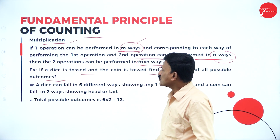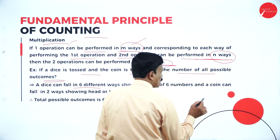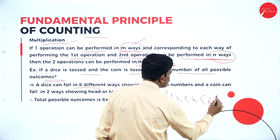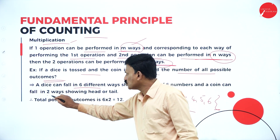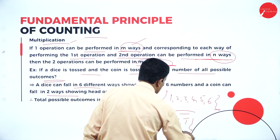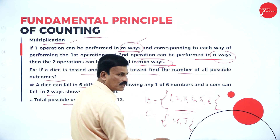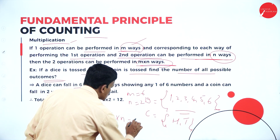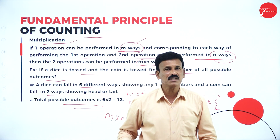A die can fall in six different ways, showing numbers 1 to 6. A coin can fall in two ways: head or tail. So M is equal to 6 and N is equal to 2. The total possible outcomes by the fundamental principle of multiplication is M into N, that is 6 into 2, equal to 12 ways. This is called the fundamental principle of multiplication in counting.